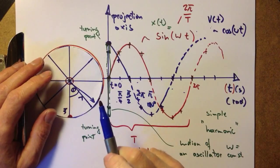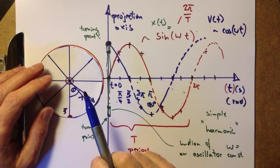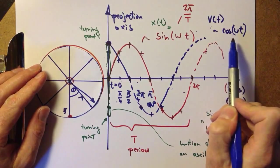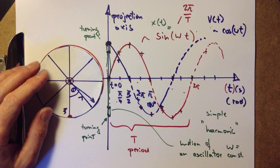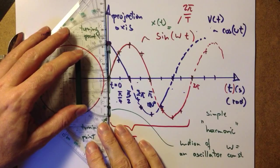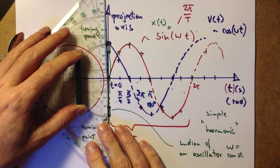You can also see that we can swap the two over. We can make the position function a cosine function and the v function a sine function, because all we need to do is to shift our projection axis from this point of time to a different point of time. Let's move it forward by 90 degrees.